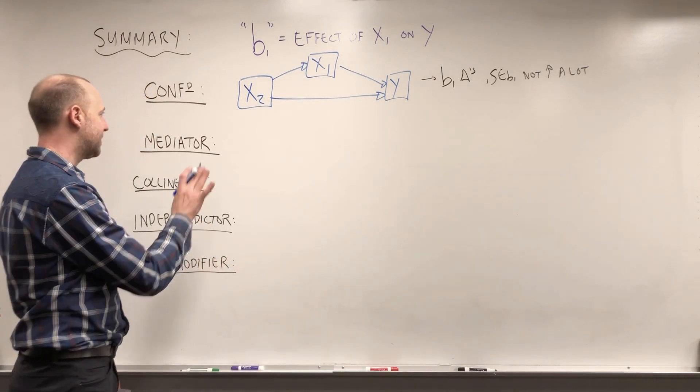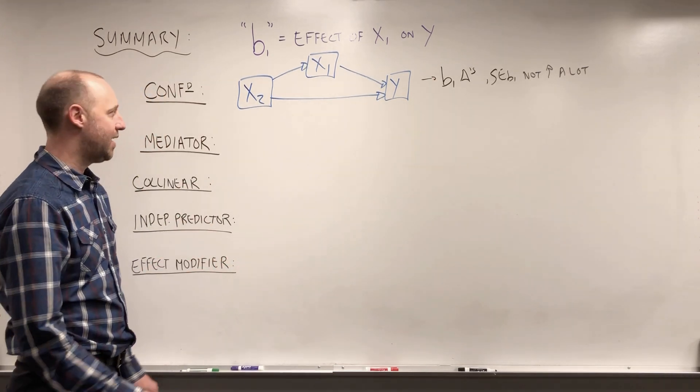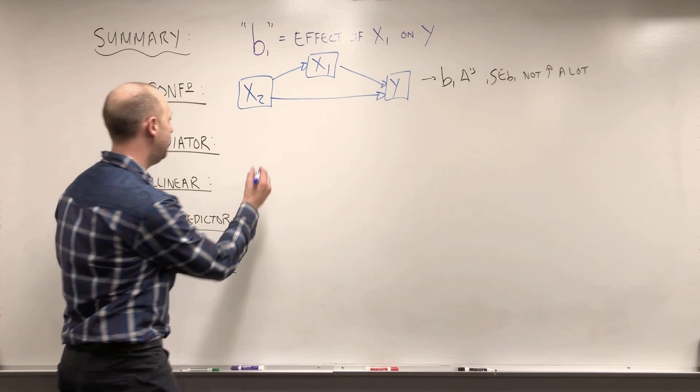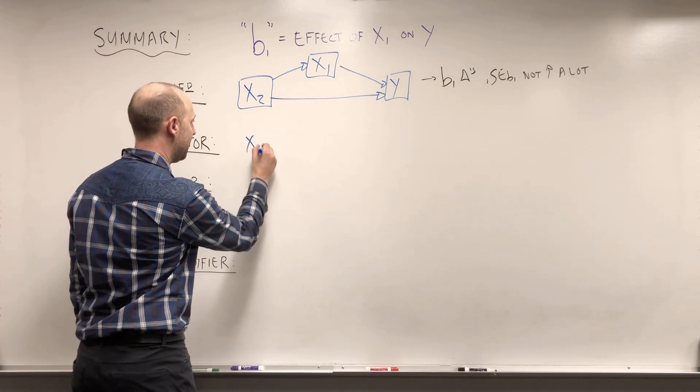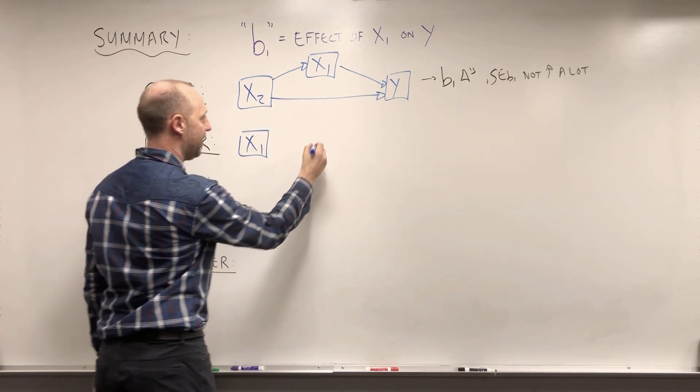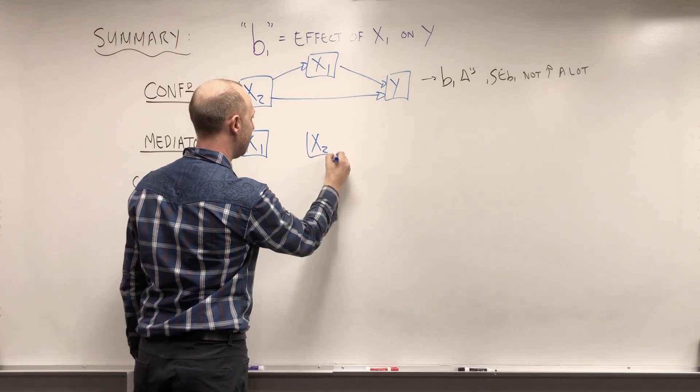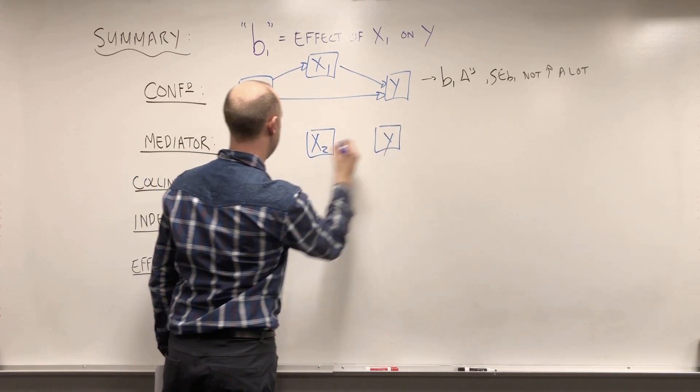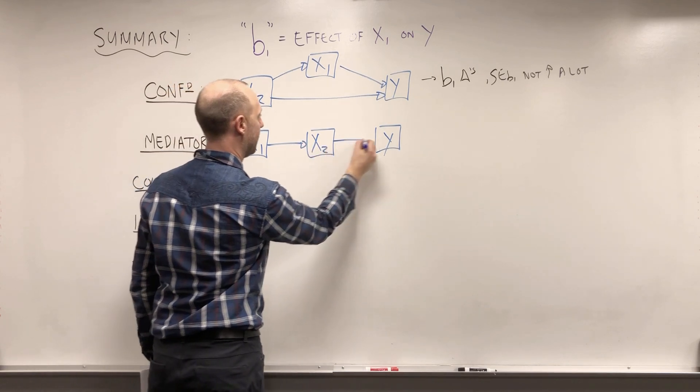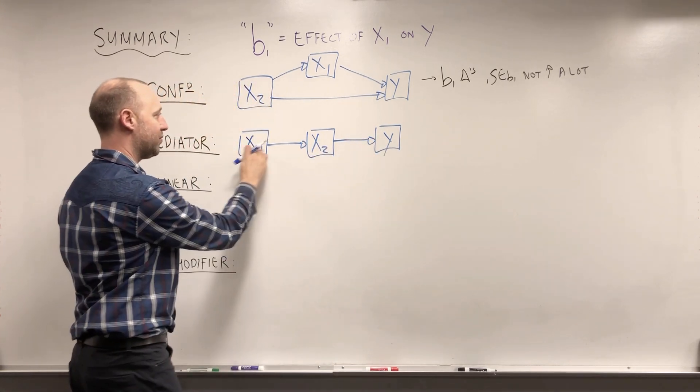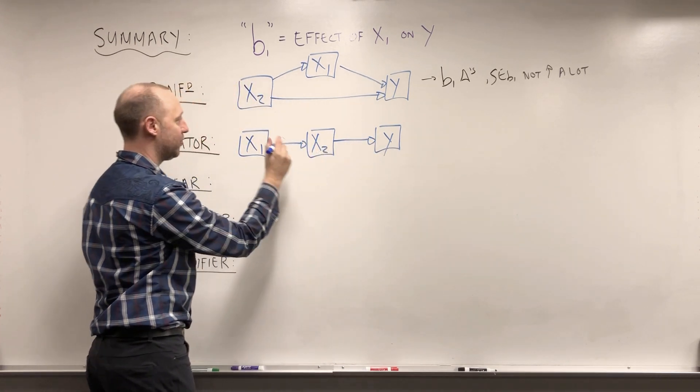Mediators are very similar to confounders, behave the same numerically in a model. The main difference was here we have X1 and X2, the mediator, is on the pathway between X1 and the outcome. So the effect that X1 has on Y at least partially goes through X2.